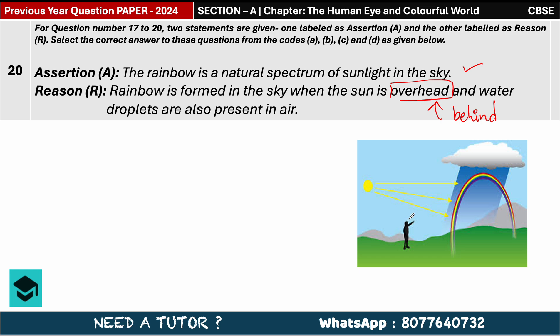You see, this person is standing somewhere over here. Sun is behind and water droplets are in front of them. Then only it is possible. So we know that the reason is incorrect.